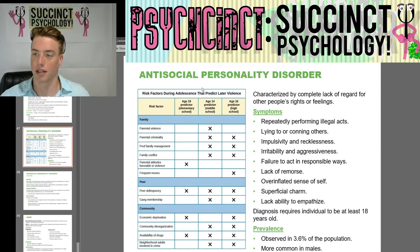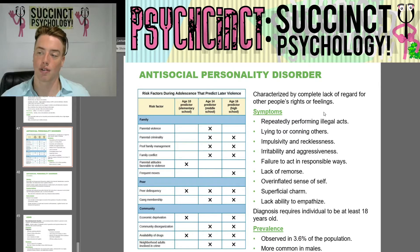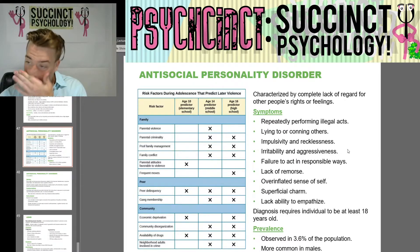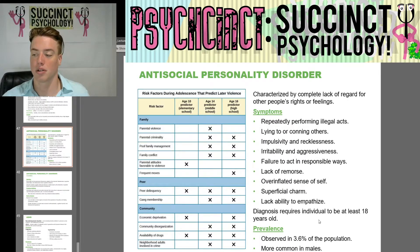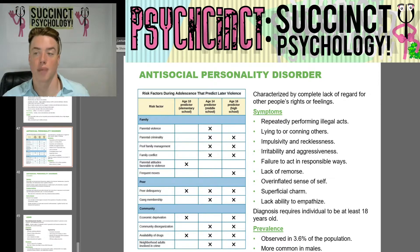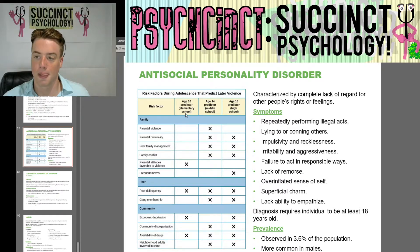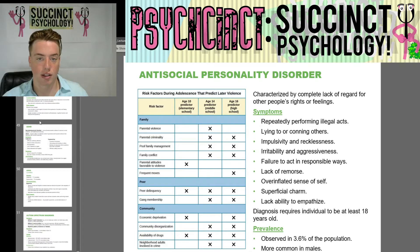Antisocial personality disorder is characterized by a complete lack of regard for other people's rights or feelings. Symptoms include repeatedly performing illegal acts, lying to or conning others, impulsivity or recklessness, irritability and aggressiveness, failure to act in responsible ways, lack of remorse, an overinflated sense of self, superficial charm, and a lack of ability to empathize. Diagnosis requires individuals to be at least 18 years old, and prevalence is observed in 3.6% of the population, more common in males. There is also a chart showing risk factors during adolescence that predict later violence — you can pause the video to review those if you'd like.